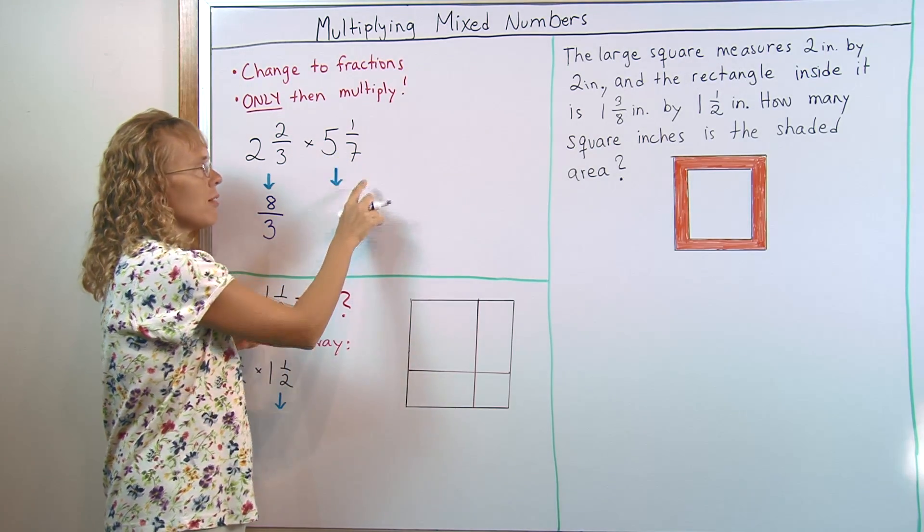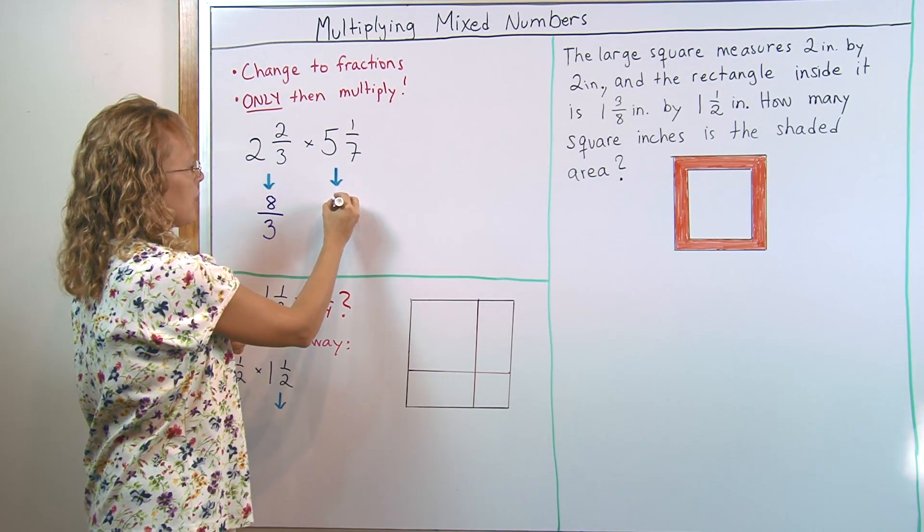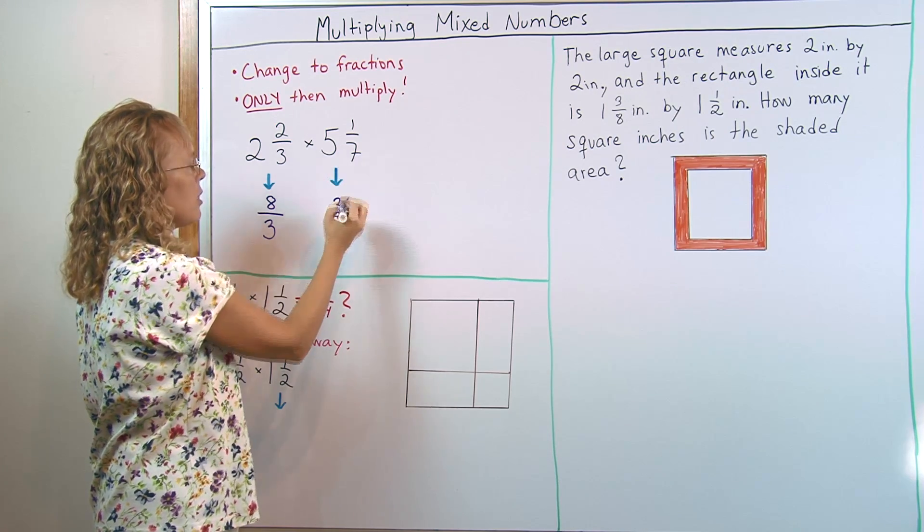Here we go, 5 times 7 is 35, plus 1, 36. And the denominator is 7.